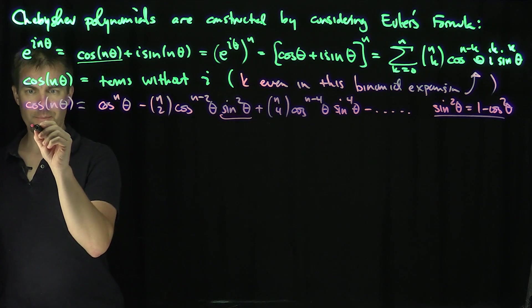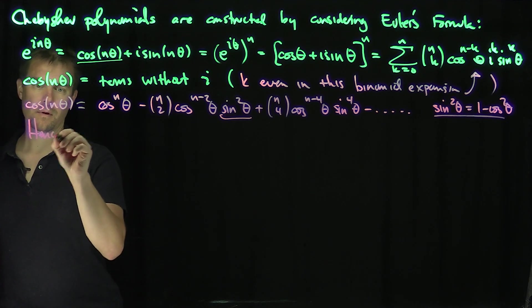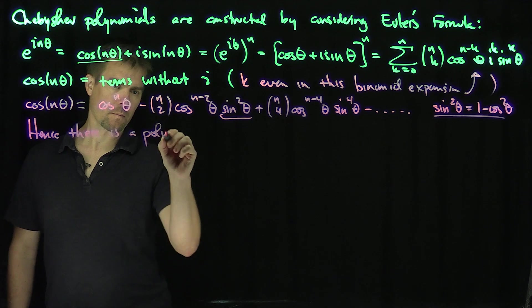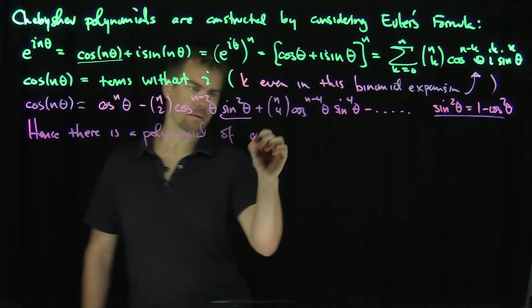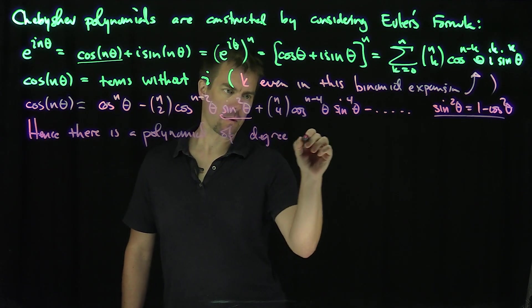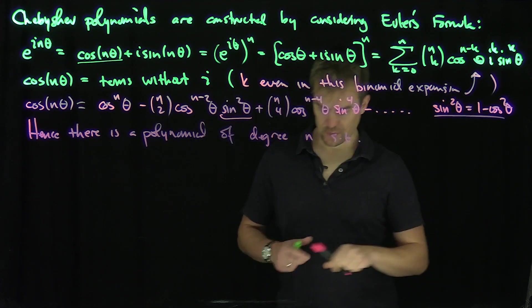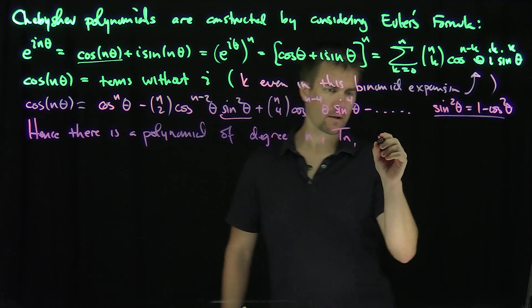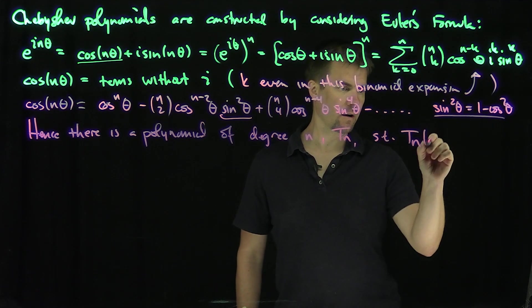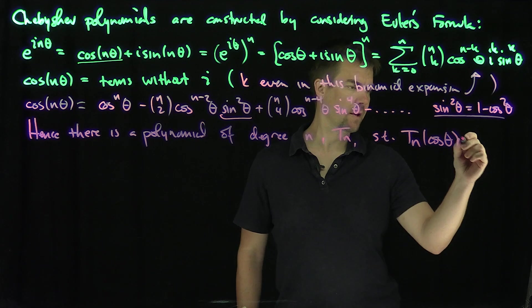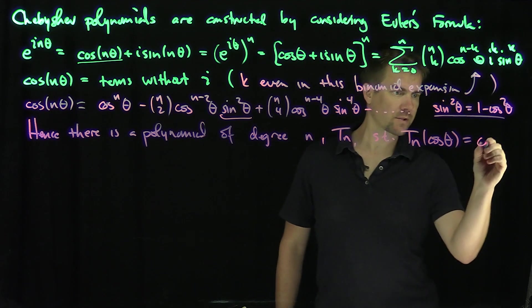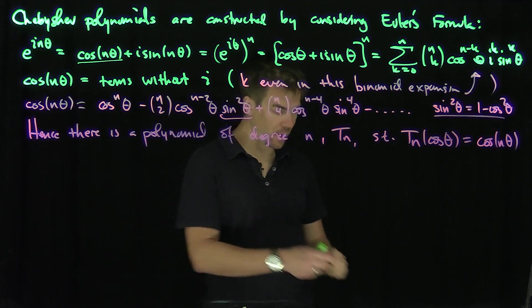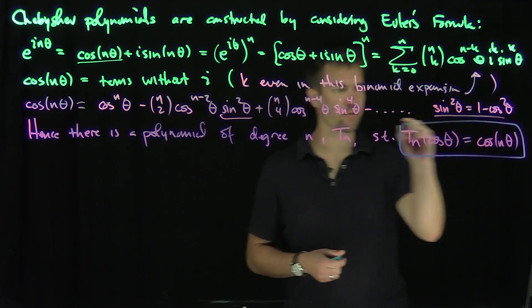Therefore there exists a polynomial of degree n — classically called T_n — such that T_n(cosine(theta)) = cosine(n·theta). This relationship defines the Chebyshev polynomial T_n.